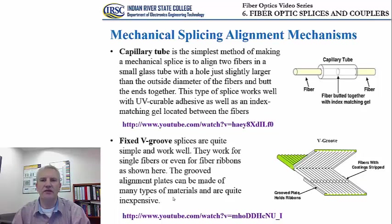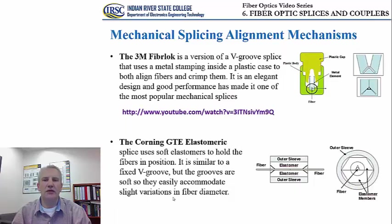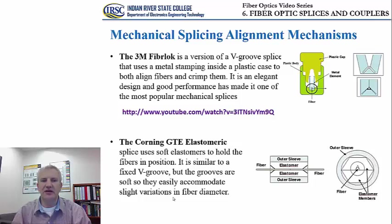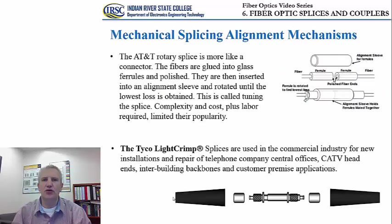The 3M Fiber Lock is a version of the V-groove splice that uses metal stamping inside a plastic case to align and crimp fibers. Its elegant design and good performance have made it one of the most popular mechanical splices. Corning also offers their GTE Elastometric splice, which uses soft elastomers to hold fibers in position. This technique is similar to the fixed V-groove, but the grooves are soft, so they can easily accommodate slight variations in fiber diameter.